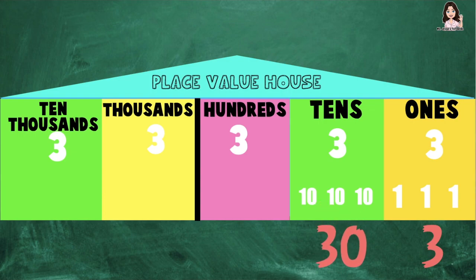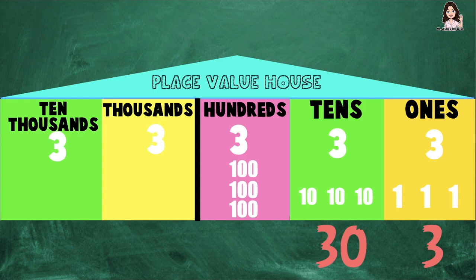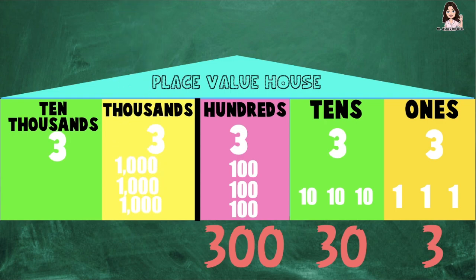Let's proceed now to the hundreds place. At the hundreds place, we have 3 hundreds. So let's count. The value of digit 3 at the hundreds place is 300. How about the digit 3 at the thousands place? We have 3 thousands. Let's count: 1,000; 2,000; 3,000.